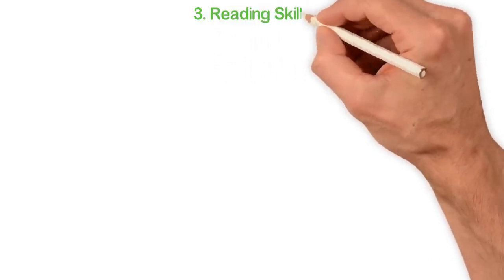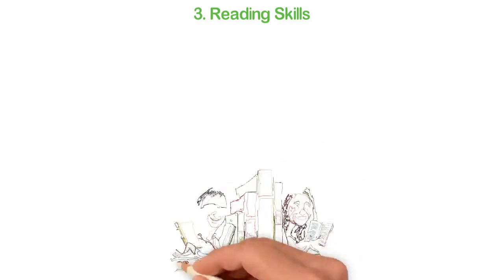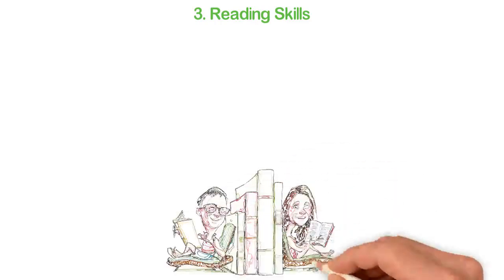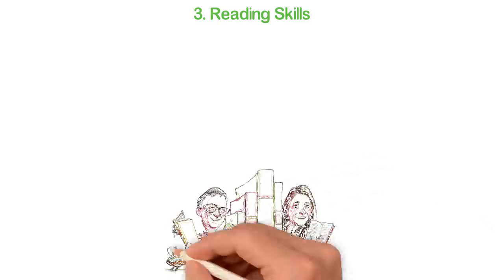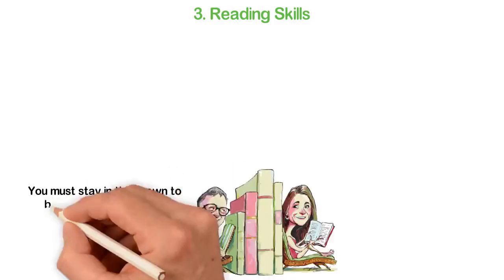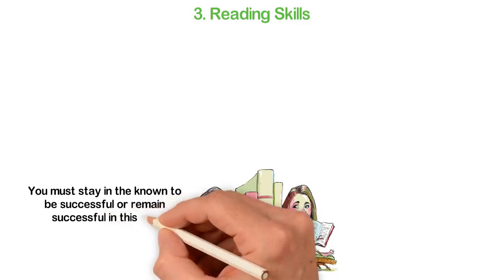3. Reading Skills. You should love knowledge because life changes so fast that if you don't update your knowledge base very fast, you won't be relevant. Bill Gates reads one book per week for a reason and that reason is, you must stay in the known to be successful or remain successful in this era.